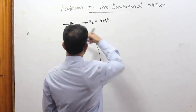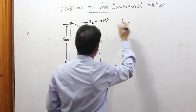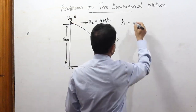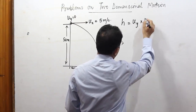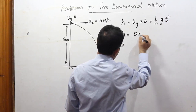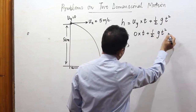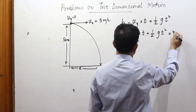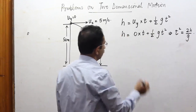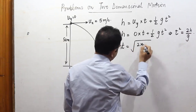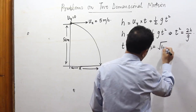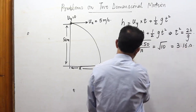Substituting values: t = √(2 × 50 / 10) = √10 ≈ 3.16 seconds. This is the same as the previous case — the vertical part of motion is unchanged by horizontal velocity. Now for the second part: we need to find the horizontal distance r.